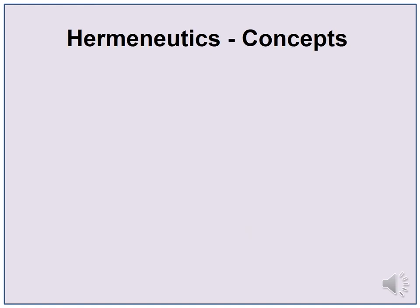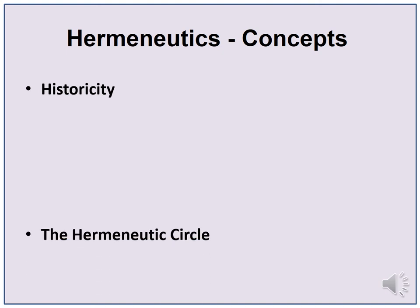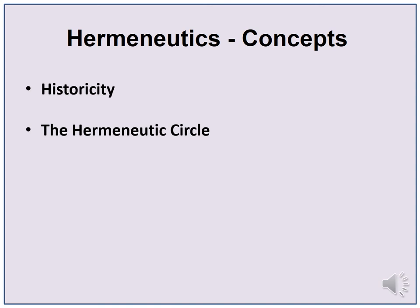There are some underlying concepts in hermeneutics. The first concept is historicity. Historicity suggests that qualitative researchers need to be aware of the historical context of people and the phenomenon being studied. This context needs to be made explicit and should help to make sense of the story. Another concept is the hermeneutic circle.